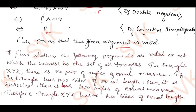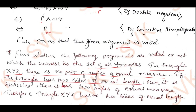Moving on to question number 2b: find whether the following argument is valid or not, where the universe is the set of all triangles. In triangle XYZ, there is no pair of angles of equal measure. If the triangle has two sides of equal length, then it is isosceles, and then it has two angles of equal measure. Therefore, triangle XYZ has no two sides of equal length.